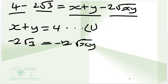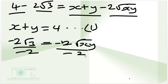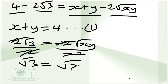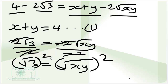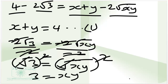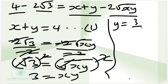Or better still, negative 2 root 3 is equal to negative 2 root xy. Dividing through by negative 2, we obtain root 3 is equal to root xy. Squaring both sides, we obtain 3 is equal to xy. We can make y the subject to obtain y is equal to 3 over x. We can call this our second equation.